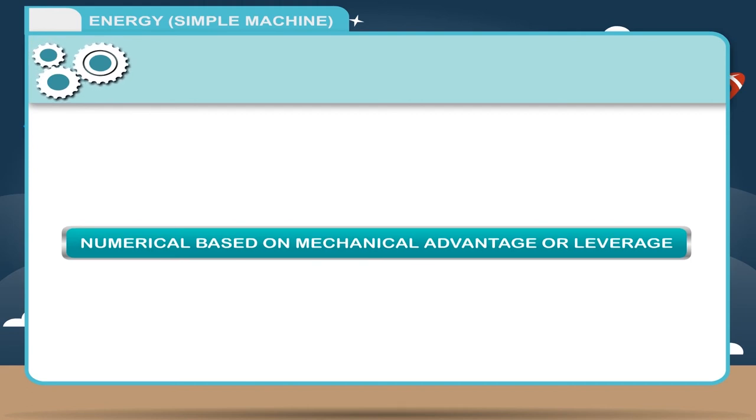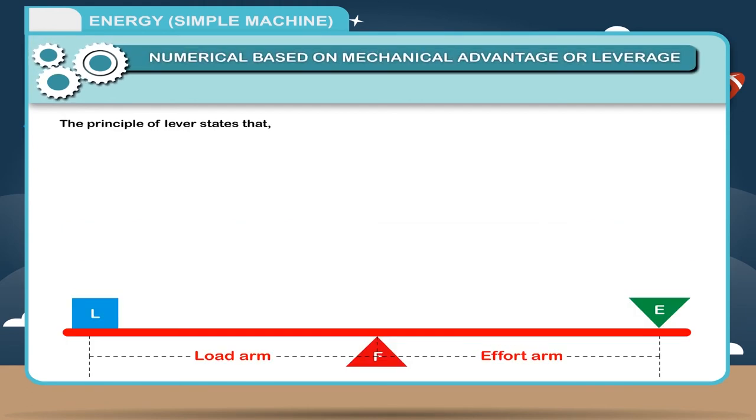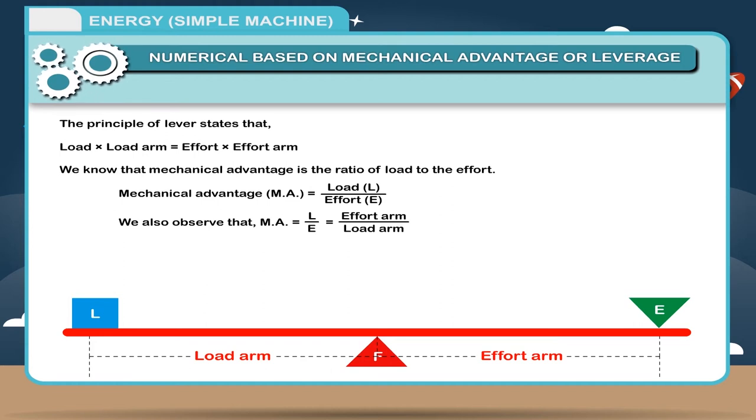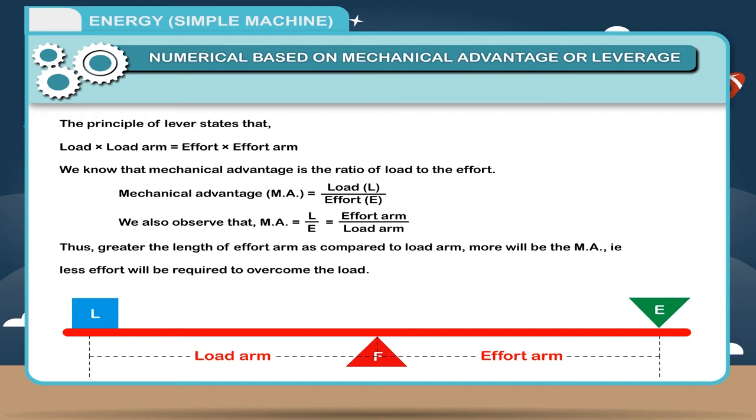Numerical based on mechanical advantage or leverage: The principle of levers states that load into load arm is equal to effort into effort arm. We know that mechanical advantage is the ratio of load to the effort. Mechanical advantage, MA, is equal to load L divided by effort E. We also observe that mechanical advantage MA is equal to L upon E, is equal to effort arm divided by load arm. Thus, greater the length of effort arm as compared to load arm, more will be the MA, that is, less effort will be required to overcome the load.